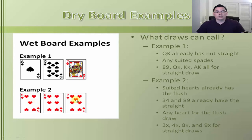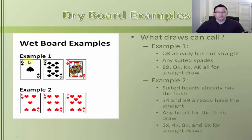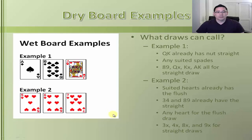Now let's look at the ultimate wet board: Five of hearts, Six of hearts, Seven of hearts — three cards coordinated in a row, all the same suit. This is about as wet as it gets. If you flop top set on a board like this, it's not a fun hand to play, especially multi-way. I've actually flopped a set of aces on a board texture like this, all the same suit, and ended up folding by the river — a correct fold, as my opponent had flopped the nut straight.